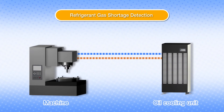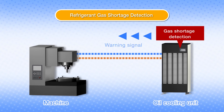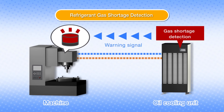In the same way, the refrigerant gas shortage detection function sends a signal from the oil cooling unit to the machine as notification when refrigerant gas shortage is detected.